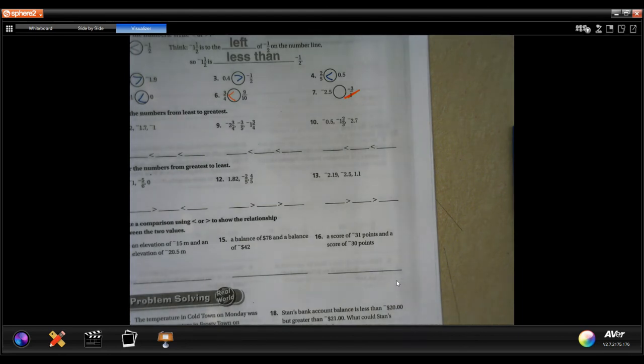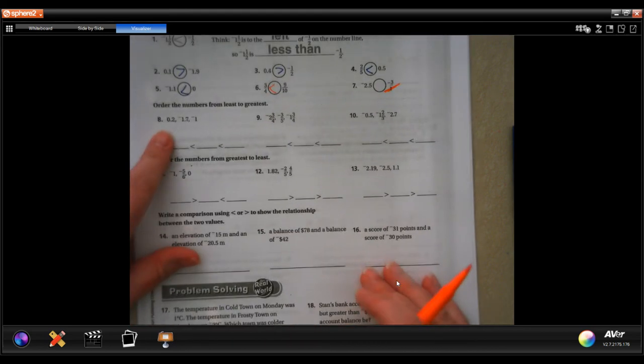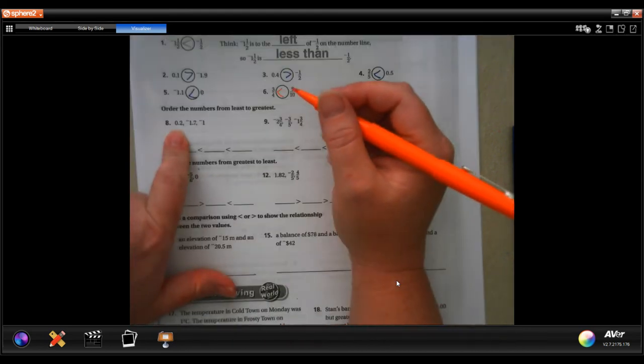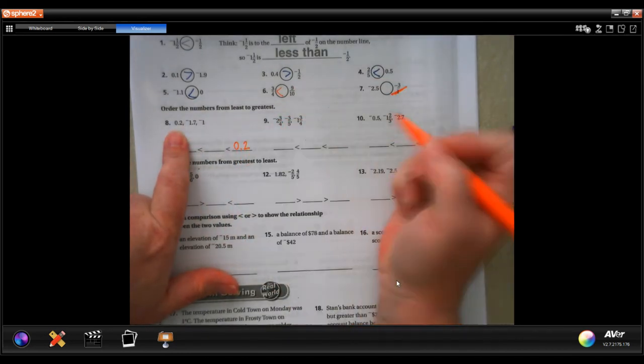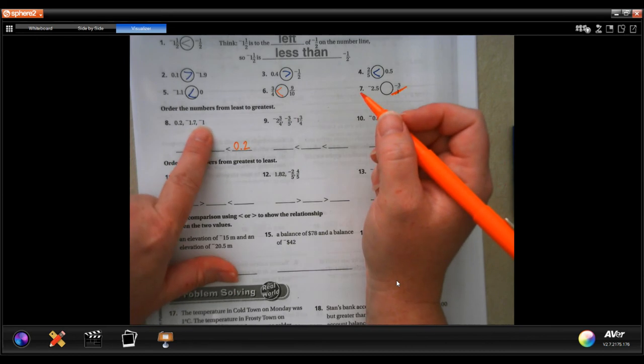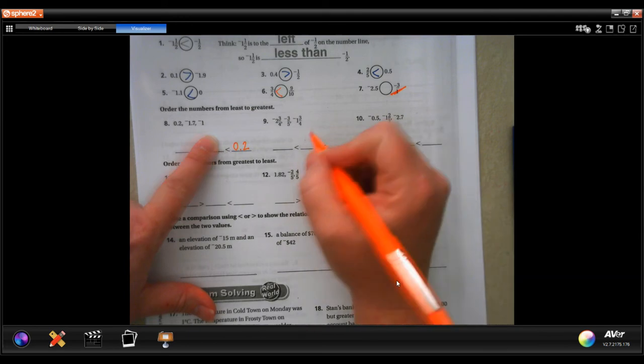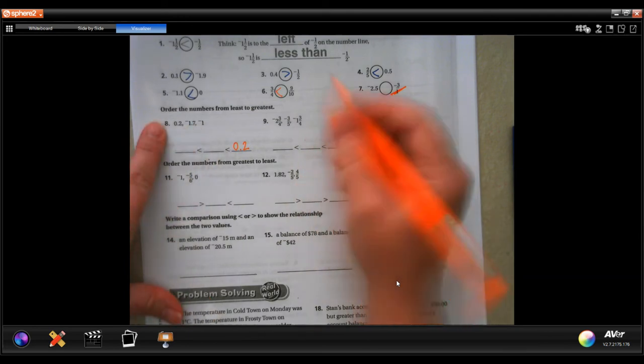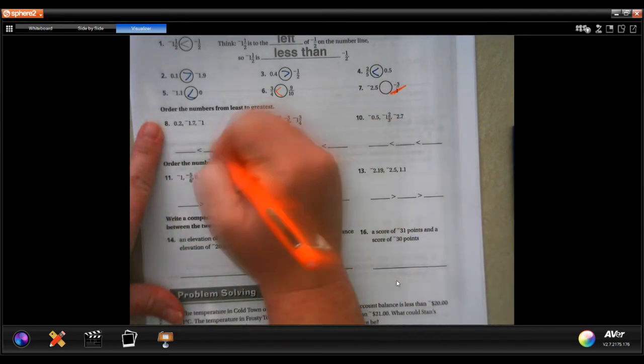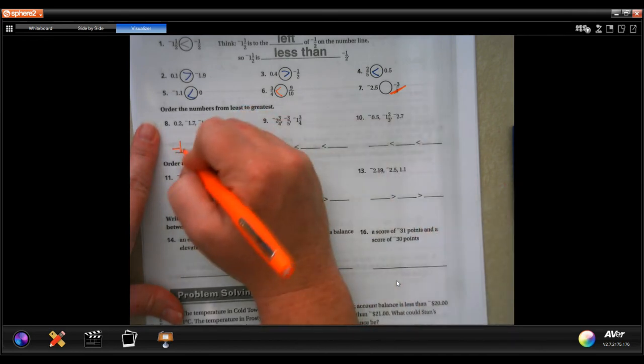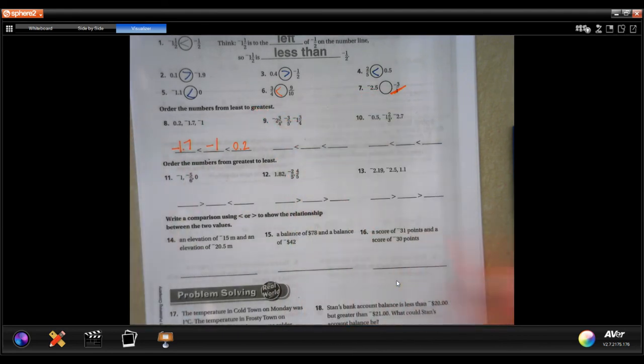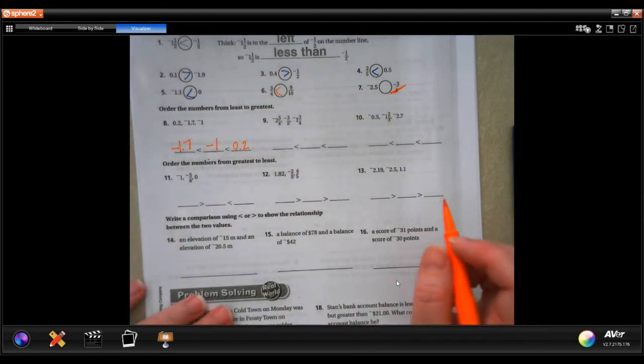So we're going to go ahead and order the numbers from least to greatest. Well, this one is positive. That means it's always going to be the greatest when your other two numbers are negative. So that one's going to go last. Now 1.7 and 1, 1 is closer to 0. If I did a number line, 1 would be closer to 0 than negative 1.7. So my negative 1 is going to go next. Negative 1.7 would be furthest away from 0 going negative.